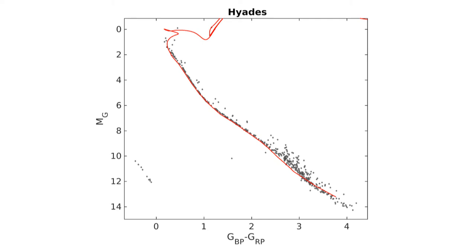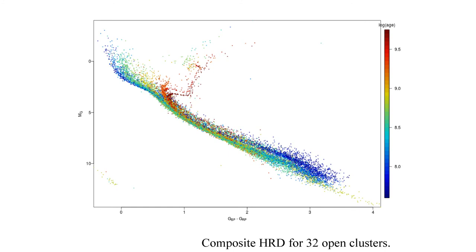That leads to a composite HR diagram using 32 open clusters, color-coded with age, where you see nicely the change of the turnoff with age, as well as the change at the bottom of the main sequence, the youngest ones being slightly above the others.